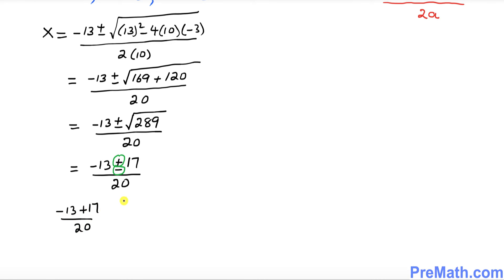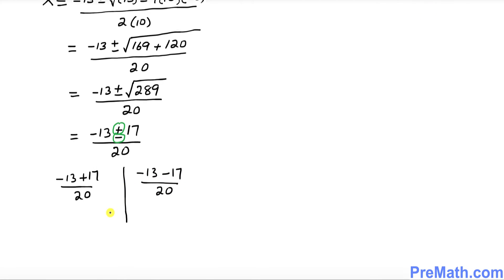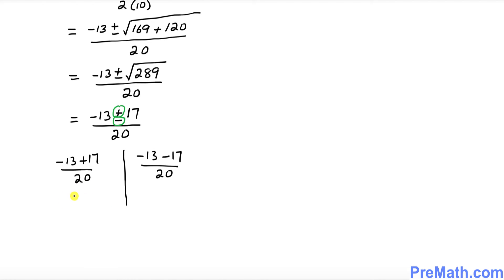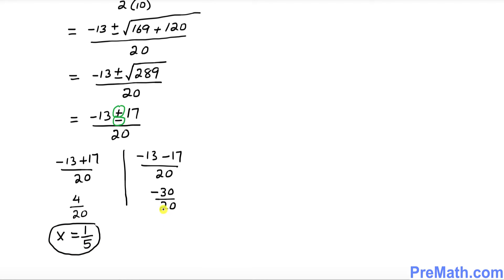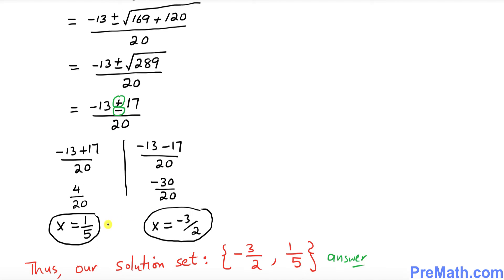Now I want you to split these up along the positive and negative signs. The first one is negative 13 plus 17 divided by 20, and the other is negative 13 minus 17 divided by 20. Simplifying: that gives you 4 over 20, and on the other side negative 30 over 20. Reducing them: x equals 1/5 as one solution, and negative 3 over 2 as the other. Our solution set is {−3/2, 1/5}.